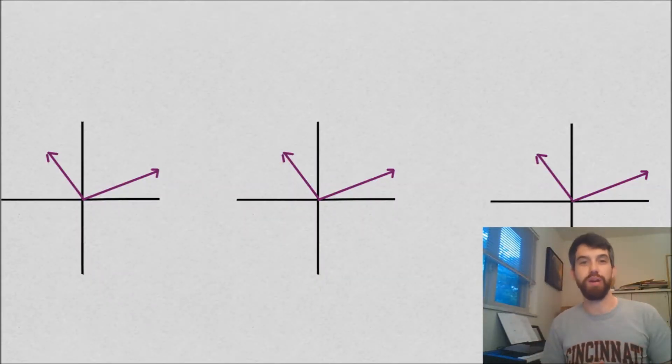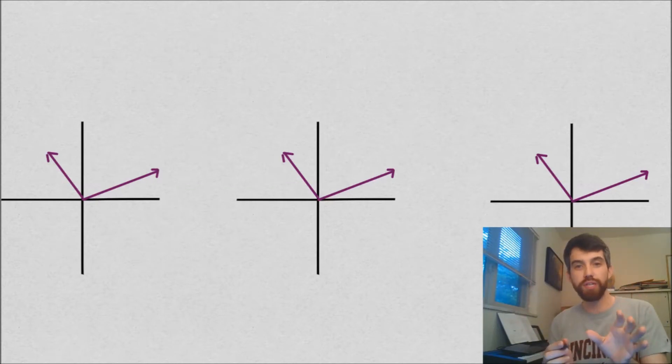What I've got is three graphs that are all the same here, and I'm going to apply three different matrices. And what we're going to see is how applying that matrix transforms these different vectors.